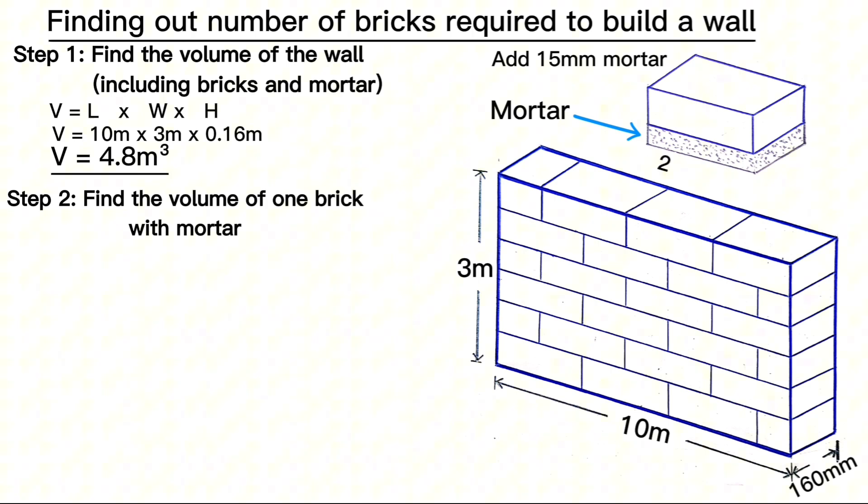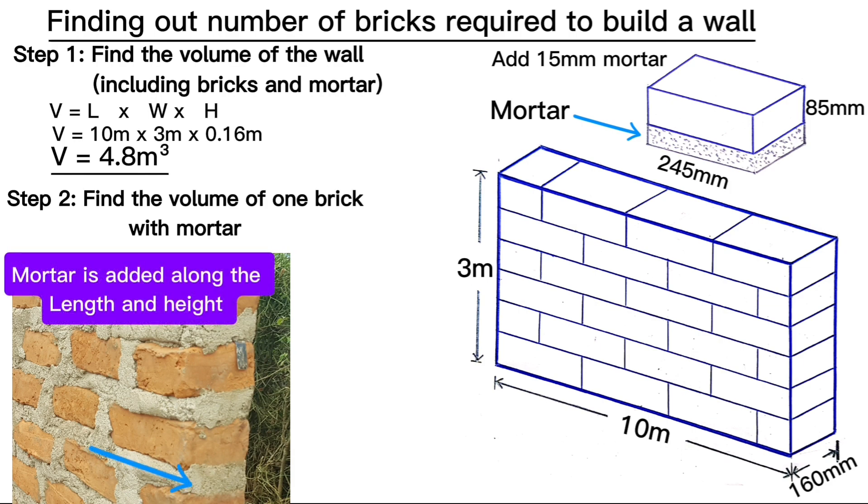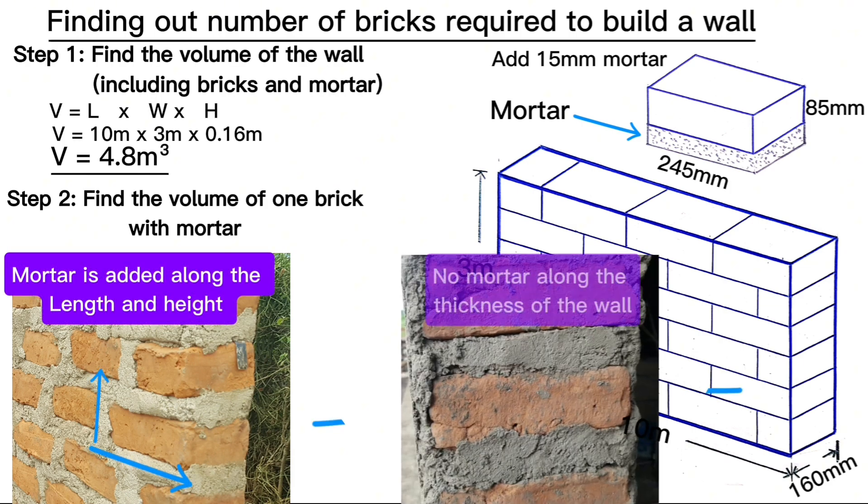When you add mortar to this brick, the length will come to 245 millimeters and the height will come to 85 millimeters. The width will still remain the same. Mortar is added along the length of the brick and also along the height.